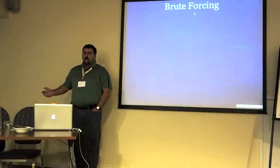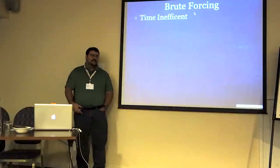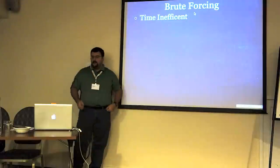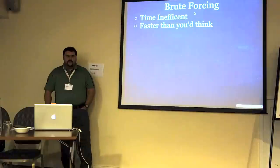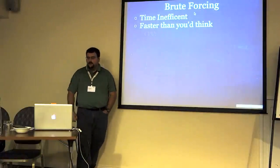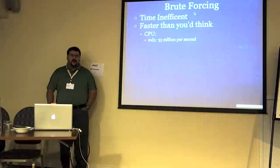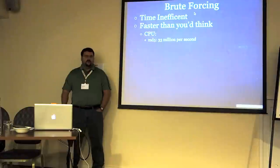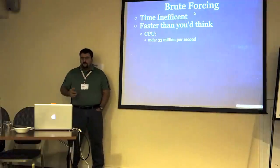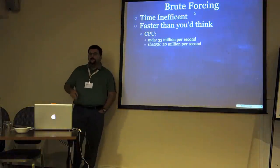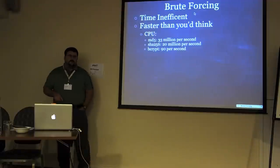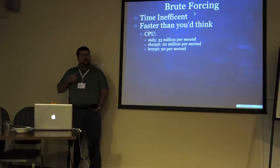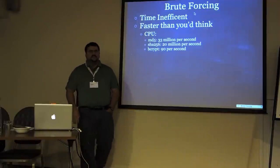The other main attack vector is brute force. It's supposedly time-inefficient, but it's a lot faster than you would think — ridiculously faster. On a CPU I can do about 33 million MD5s per second, meaning 33 million guesses per second on a brute force. For SHA-256, about 20 million. The interesting thing is Bcrypt: I can do about 90 per second. That's one of the reasons we recommend Bcrypt — because it's artificially slower, making it resistant to brute force attacks.